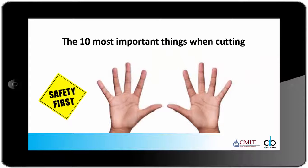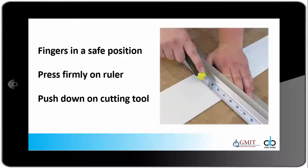Remember the ten most important things when cutting with rulers and knives is your ten fingers. If these get cut off they cannot be replaced. Remember keep your fingers in a safe position, press firmly down on the ruler and push down on the cutting tool. Take your time and don't try and cut through the material in the one go.